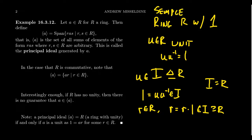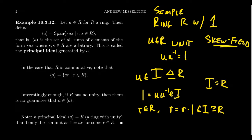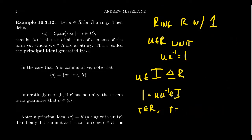This tells us that a simple ring with unity is exactly a skew field, because if every element is a unit then every non-zero ideal is forced to be the whole ring. Conversely, if there are no non-trivial proper ideals, every non-zero element must be a unit — making it a skew field. So simple rings with unity are precisely skew fields.